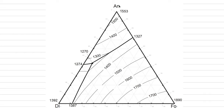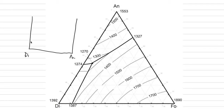In our binary system, we went from diopside to anorthite. We had a phase diagram that went from diopside to anorthite, there was a solidus, two liquidus surfaces, and a eutectic point. This diagram is how I want you to visualize this limb of the ternary diagram going from diopside to anorthite, with a eutectic point at 1274 right here.